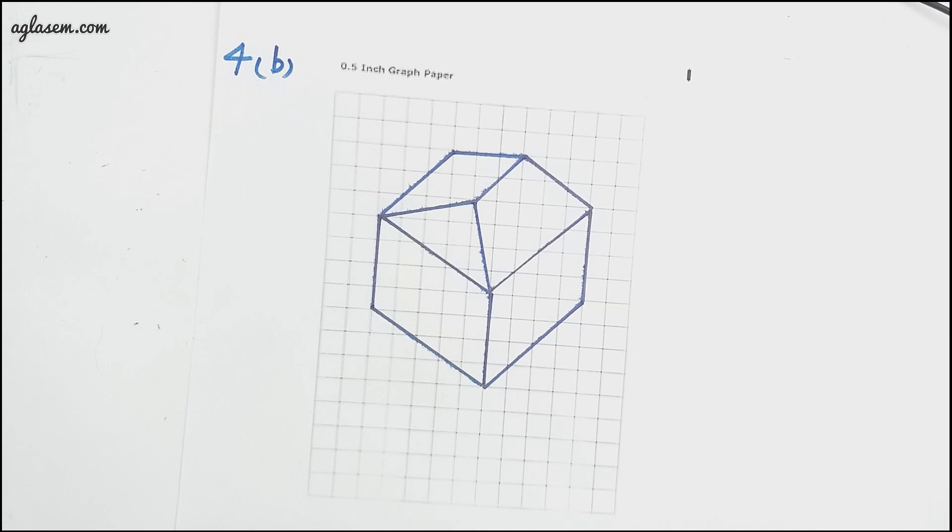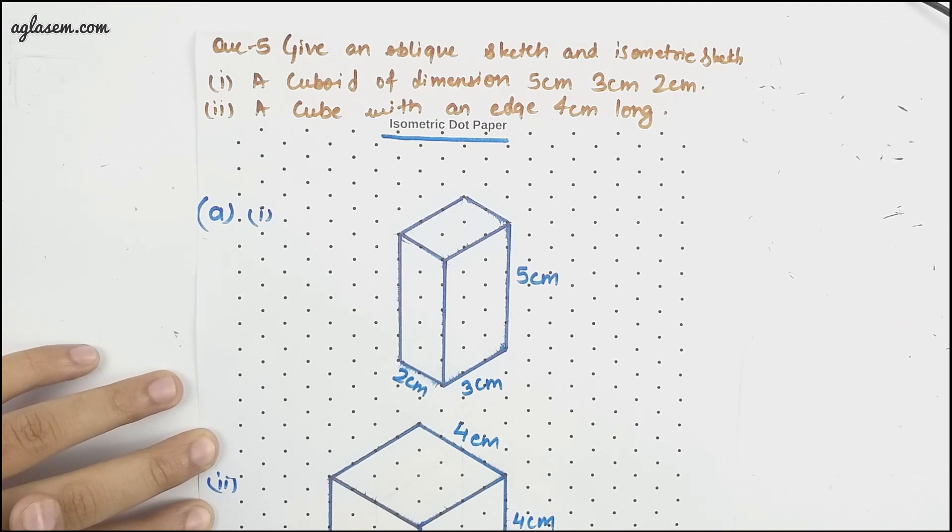Now question number five. Give an oblique sketch and isometric sketch for each of the following. A cuboid of dimension 5 cm, 3 cm and 2 cm. A cube with an edge of 4 cm long.